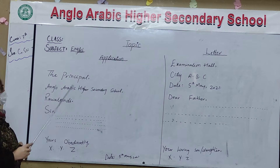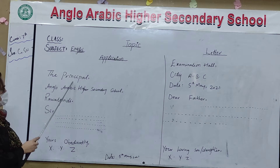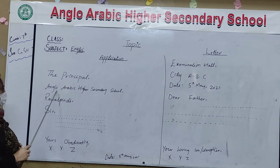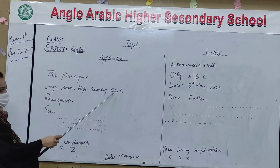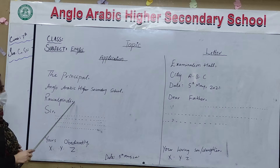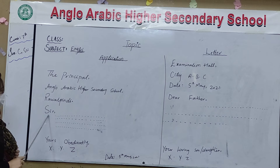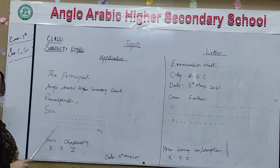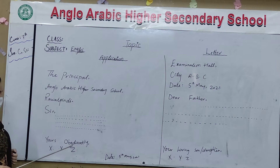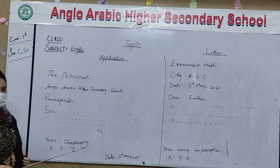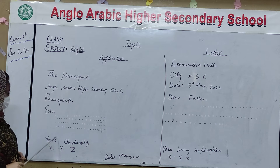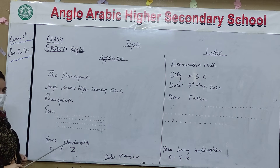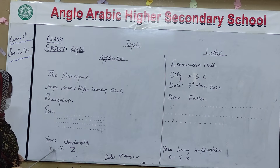First of all, if you are writing an application, you have to write 'The Principal,' after that a comma, then 'Anglo-Arabic High Secondary School,' comma, then 'Rawalpindi,' full stop. Then 'Sir,' comma, and you start from here and so on. In the end, you have to write 'Yours obediently.' One thing to keep in mind: there is no apostrophe or comma over the S — you write 'yours' without comma and apostrophe.